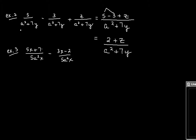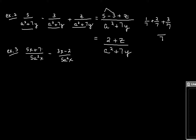So you notice all the denominators are the same here — it's the same thing as adding regular fractions. Let's do 1 seventh plus 2 sevenths plus 3 sevenths. Since the denominator is all the same, you're just going to have 6 sevenths. All right, let's look at one more of these easy kinds.